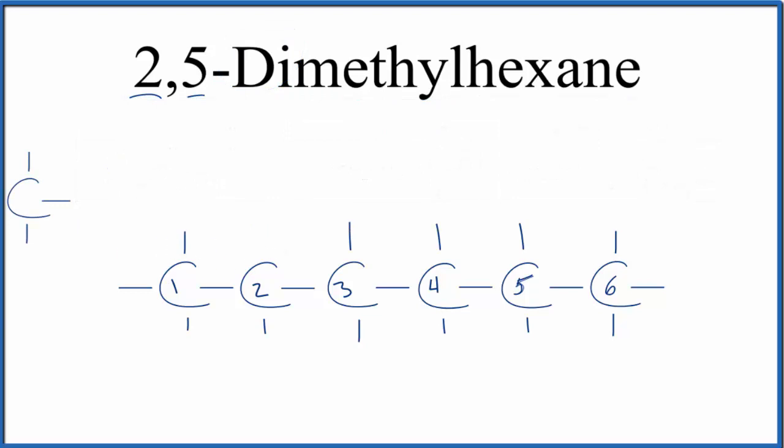So we replace this hydrogen here with a methyl group on the second carbon. And then on the fifth, we'll replace, let's do the one on the bottom. We could do the top or the bottom. Either one's okay. Like this. And now we have 2,5-dimethylhexane.